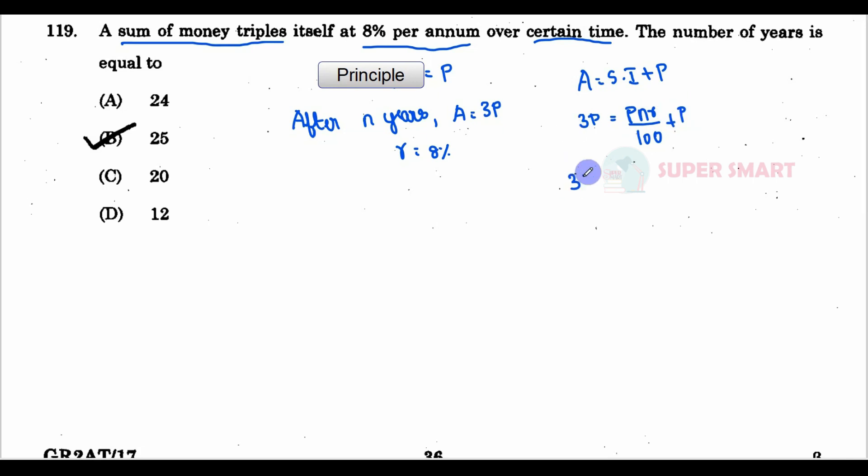In this case, 3P minus P equals P into n, R equals 8 divided by 100. So here we have 3P minus P equals 2P.